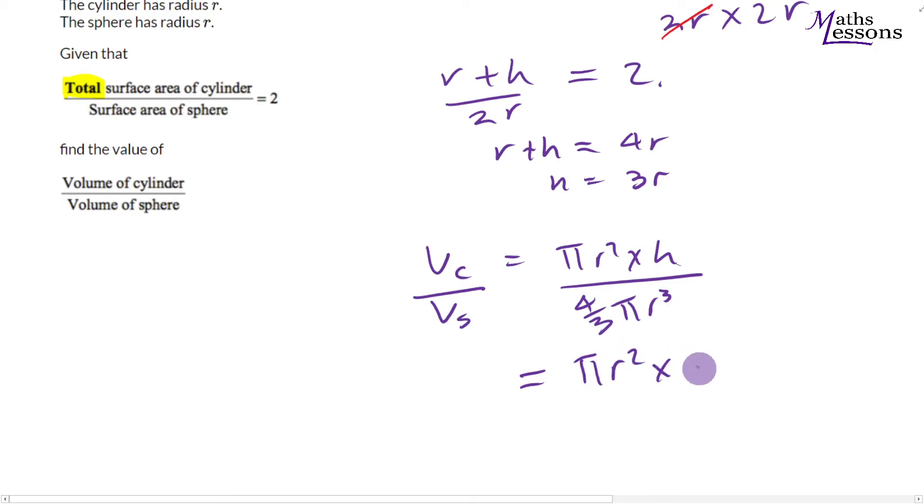If you realize that, this becomes quite a straightforward problem. But if you don't realize it, it makes it a tricky problem. So I'm replacing this h with 3r, and I still get the 4 thirds pi r cubed on the bottom.